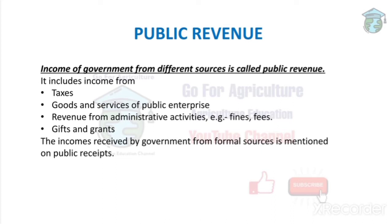These sources include goods and services of public enterprises, sales tax, GST, fines, fees, gifts, and grants. Grants are funds — for example, in case of any natural calamity, if one state gives funds to another state, those funds are called grants.